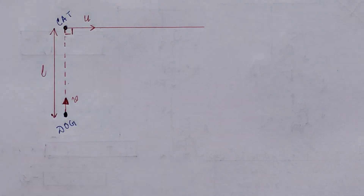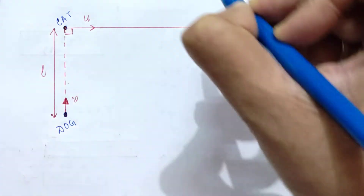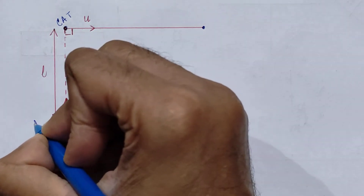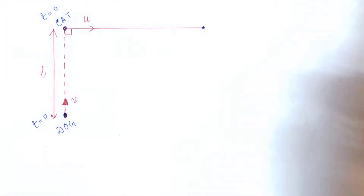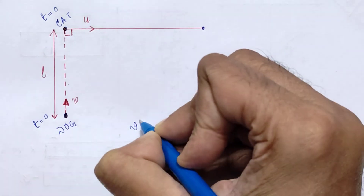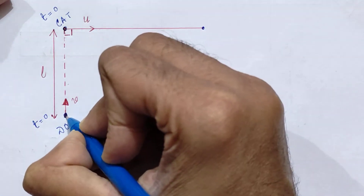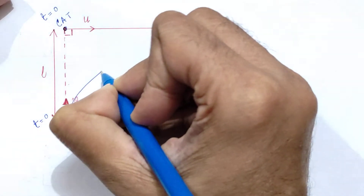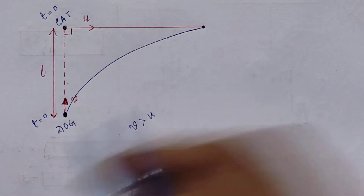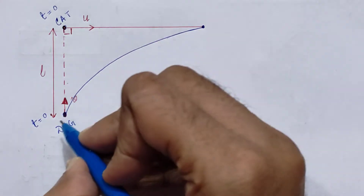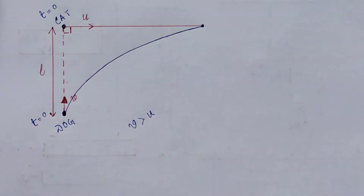The question is: after how much time will the dog catch the cat? At this instant t equals zero, it is given in the question that v is greater than u. The dog has to run in this particular direction in order to catch up with the cat. At every instant of time, its direction of velocity changes constantly, given by a tangent constructed at that point.